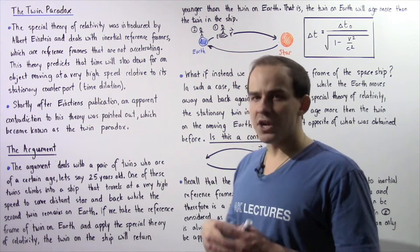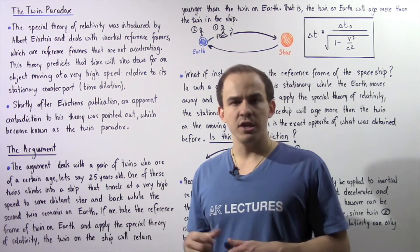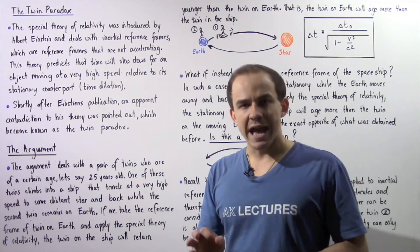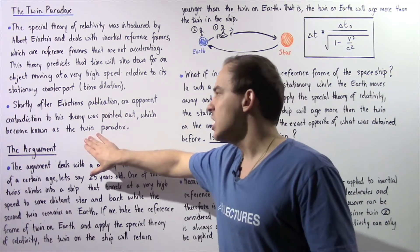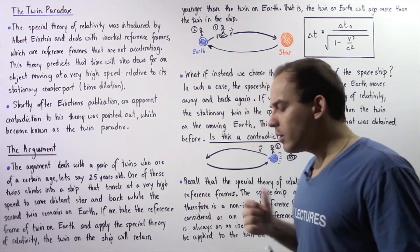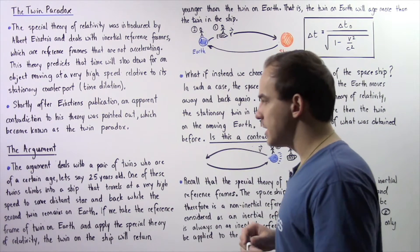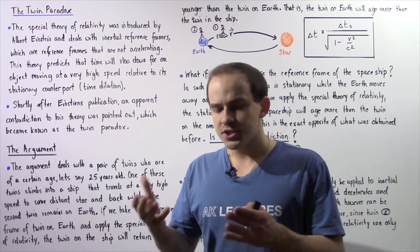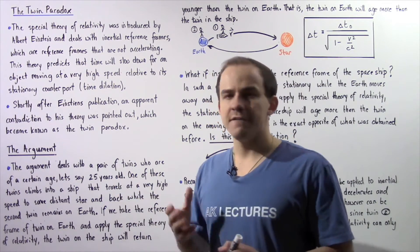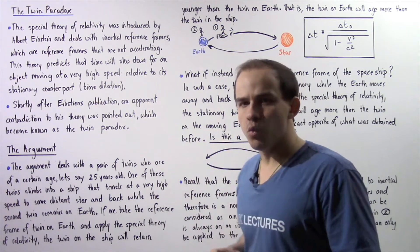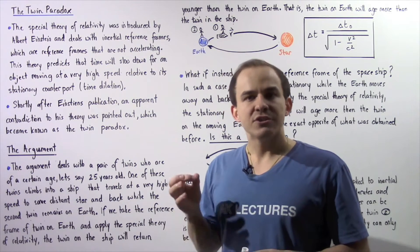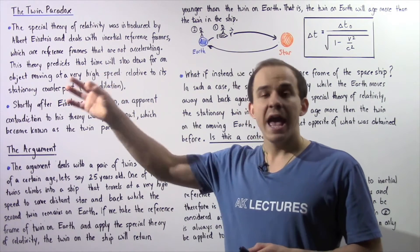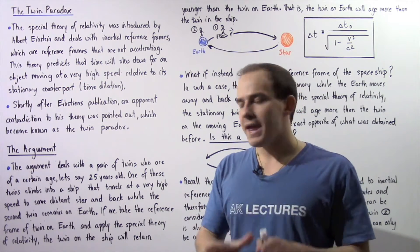Shortly after Einstein's publication of the special theory of relativity, an apparent contradiction was pointed out, which became known as the twin paradox. The argument deals with a pair of identical twins, both 25 years old. One twin climbs into a spaceship that travels to a very distant star at very high velocity, going there and back, while the second twin remains on Earth.